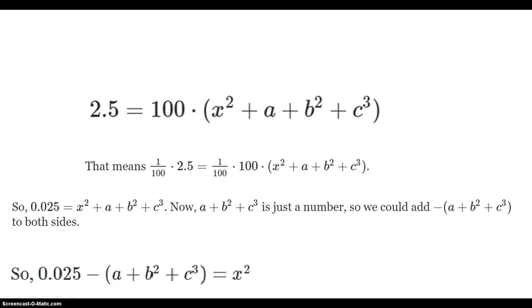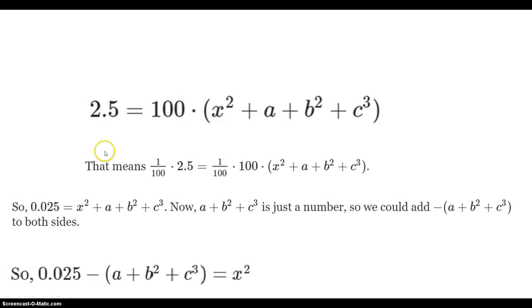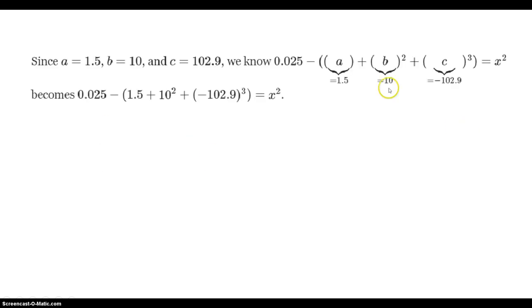Now we're left with: 0.025 minus the quantity (a plus b-squared plus c-cubed) equals x-squared. Now we rewrite our equation and plug in the values by substitution.